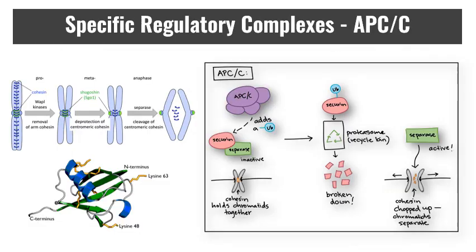APCC is not a cyclin combo — it's a different system. The anaphase checkpoint ensures kinetochores are properly attached. APCC uses a marker called ubiquitin: ubiquitin binds to the protein securin, which acts as a security lock on the enzyme separase. Separase destroys cohesins — the proteins holding the centromere together. When securin is tagged by ubiquitin it is destroyed, separase becomes active, cohesins are cut, and the chromosomes separate, allowing anaphase to continue.